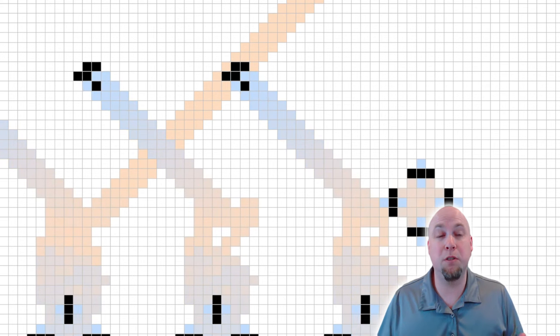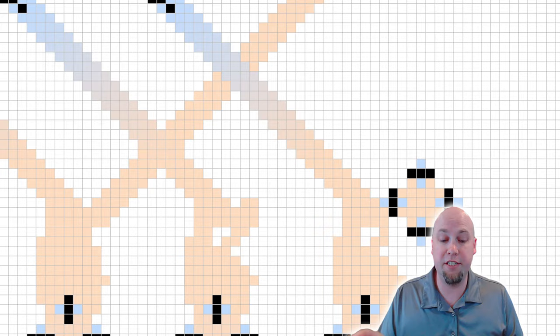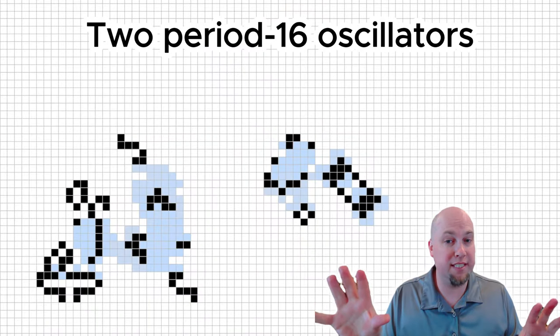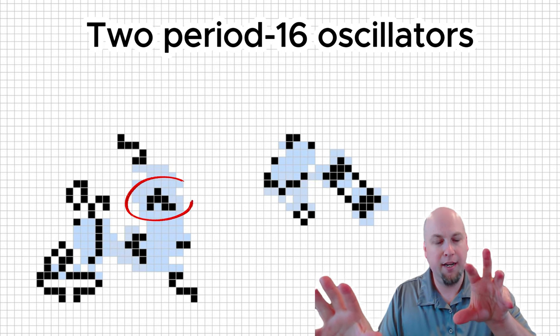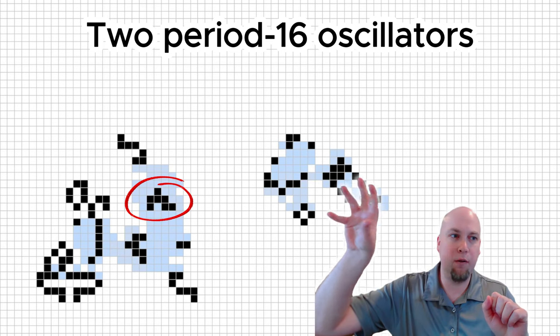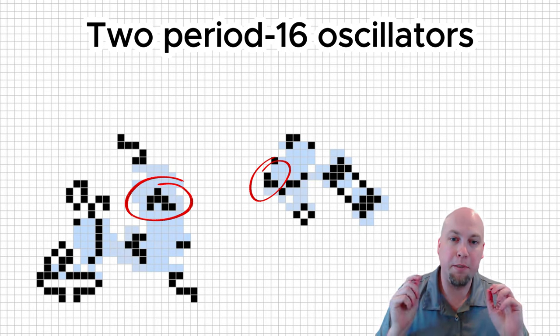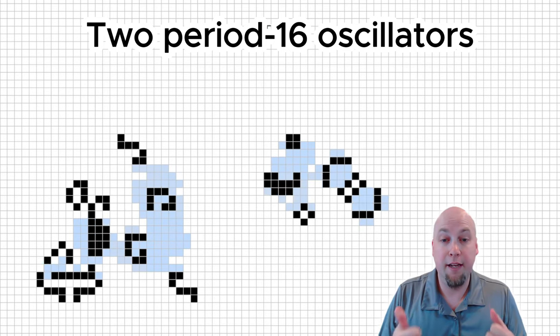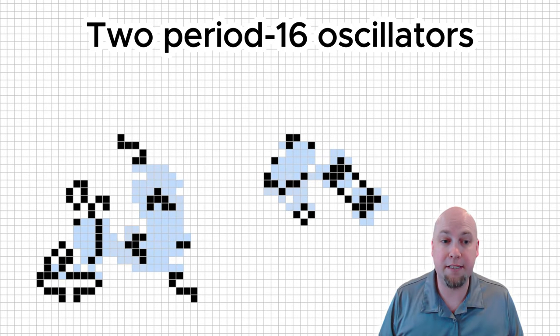So now we have a path forward towards creating a true period glider gun via this reaction. What we're going to do is we're going to take two oscillators of the same period. One of them is going to create the B-heptomino here, and the other one is going to create one of these other configurations that, when combined with the B-heptomino, produces a glider. And fortunately, for some periods, there are already known oscillators that do these tasks.